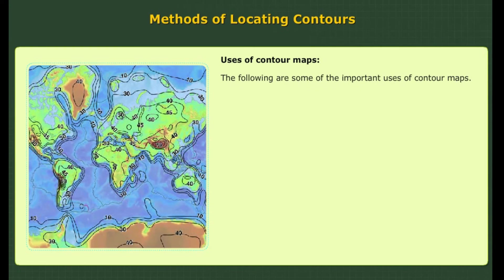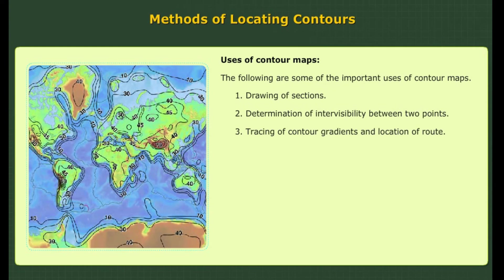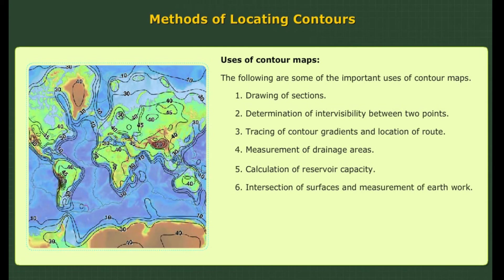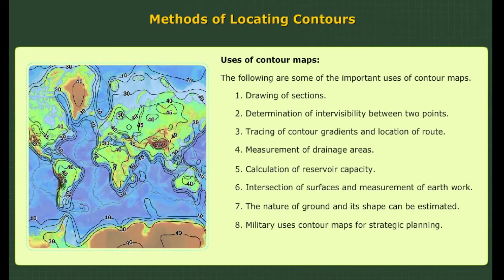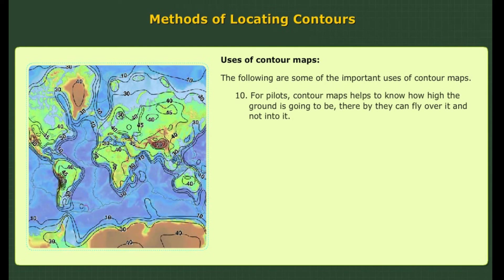Uses of contour maps. The following are some of the important uses of contour maps: 1. Drawing of sections. 2. Determination of inter-visibility between two points. 3. Tracing of contour gradients and location of routes. 4. Measurement of drainage areas. 5. Calculation of reservoir capacity. 6. Intersection of surfaces and measurement of earthwork. 7. The nature and shape of the ground can be estimated. 8. Military uses contour maps for strategic planning. 9. It is possible to identify suitable sites for any project from the contour map of the region. 10. For pilots, contour maps help to know how high the ground is, so they can fly over it safely.